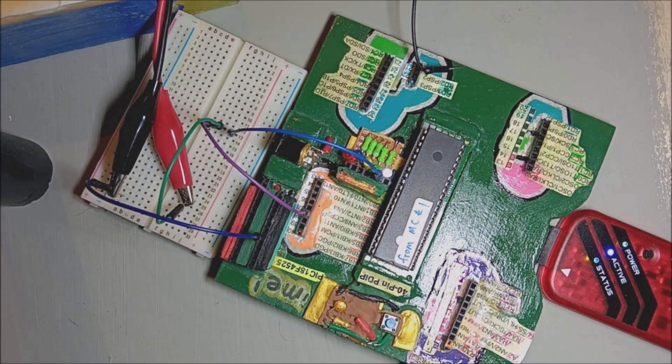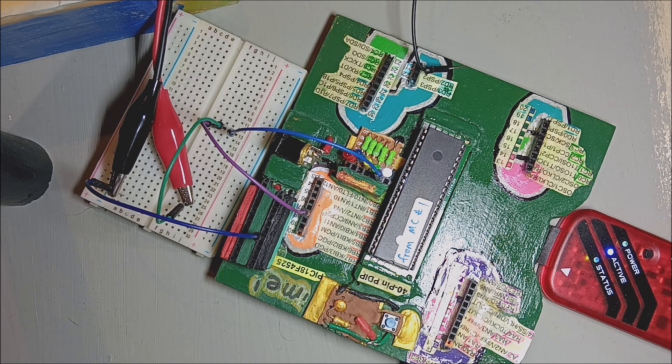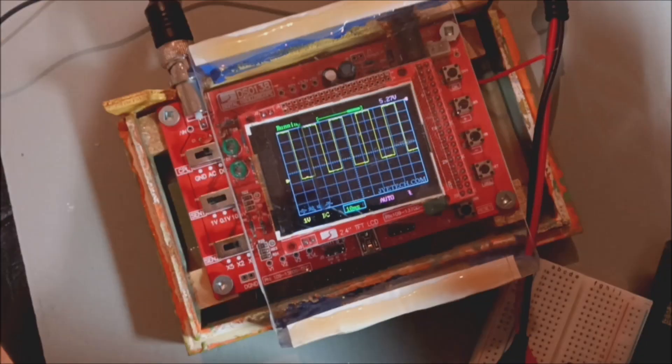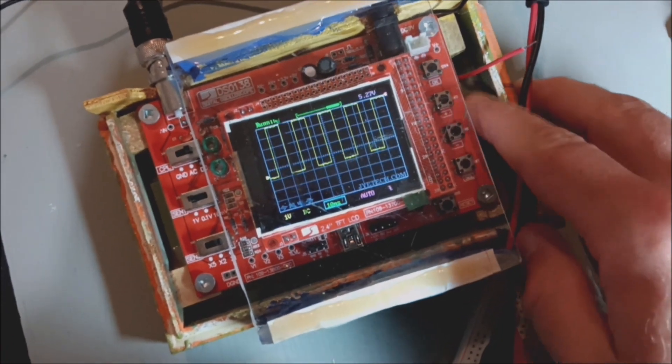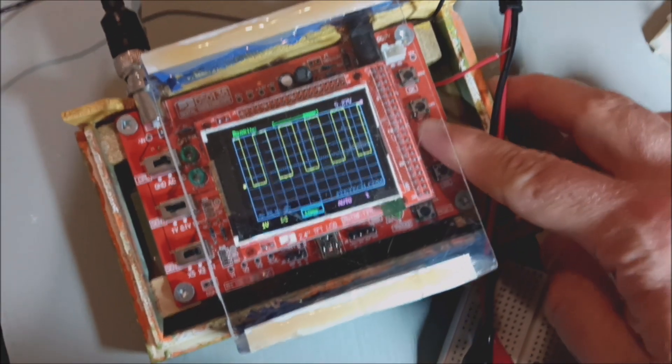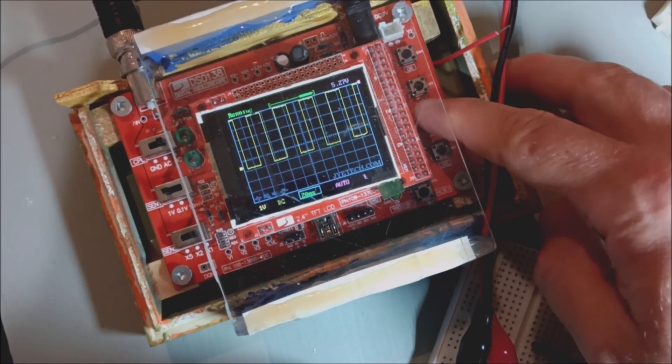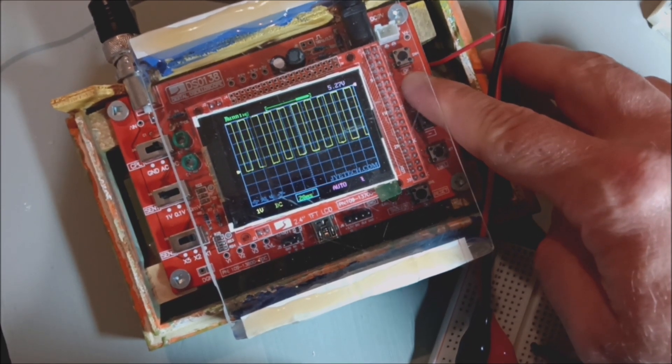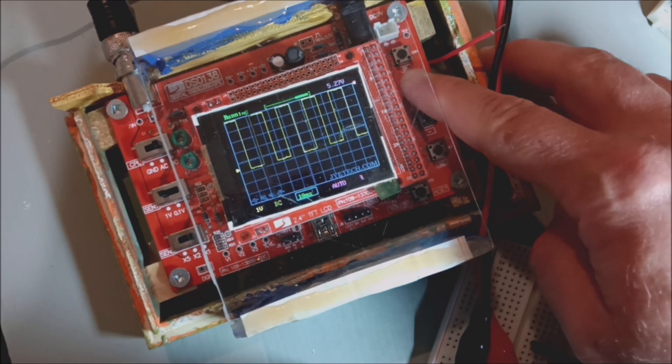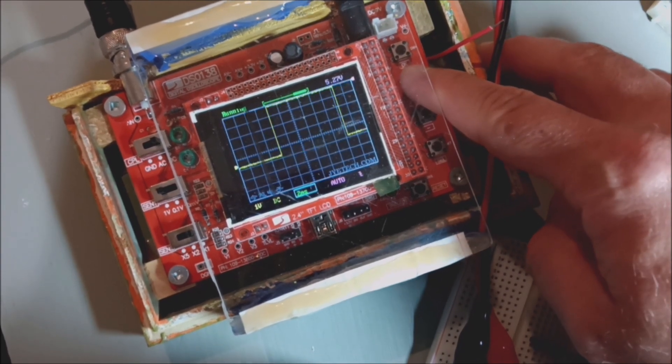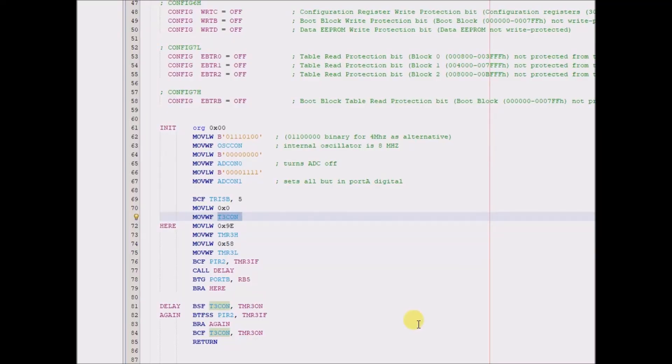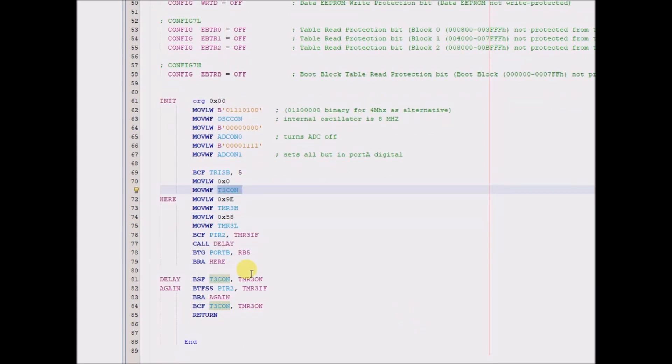So this next example, which is the Hsiao Lung Chan example, must be blinking at somewhat of a slower rate. I have it hooked up to the scope as well. Here it is, change the sample rate or whatever you call that. Good morning, so I'm just covering this code just for the sake of the learning process.